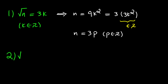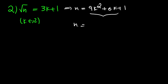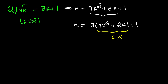For the second case, let's assume that square root of n is equal to 3k plus 1, where k is an integer. Then n equals 9k squared plus 6k plus 1. I can factor out a 3 from the first two terms, and since k is an integer, that expression is an integer, so I can replace it with p, giving n equals 3p plus 1.